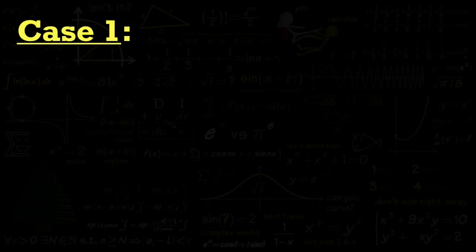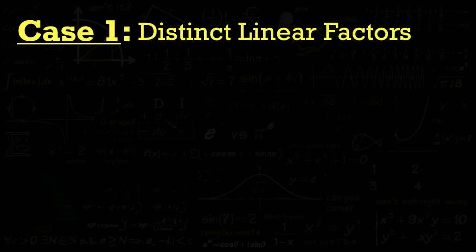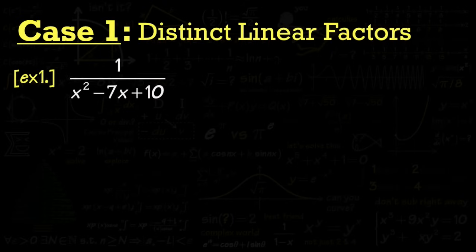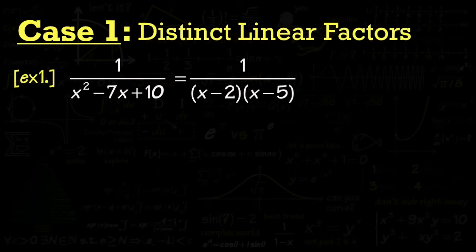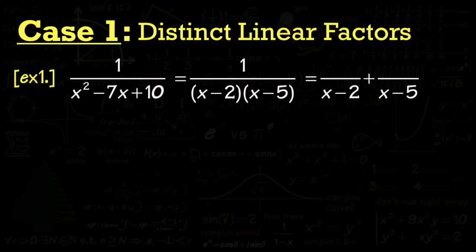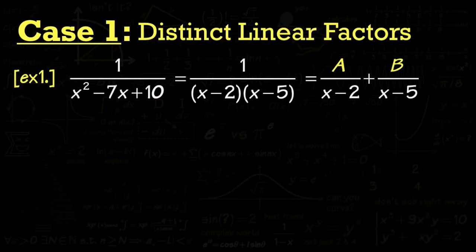Case one: distinct linear factors. Example one — 1 over x squared minus 7x plus 10. That quadratic is factorable, giving us 1 over (x minus 2)(x minus 5). We break this into two smaller fractions: one with x minus 2 on the bottom, one with x minus 5 on the bottom. Because both factors are linear, the numerators are constants — traditionally capital A and capital B.